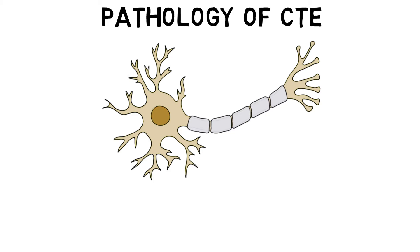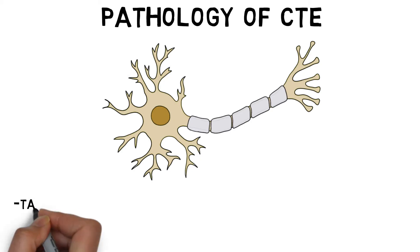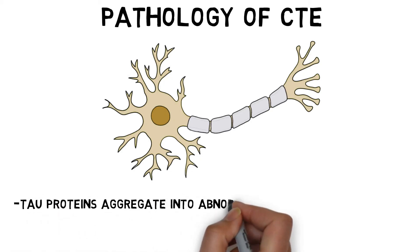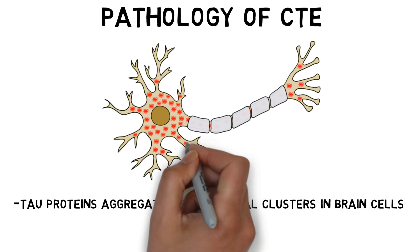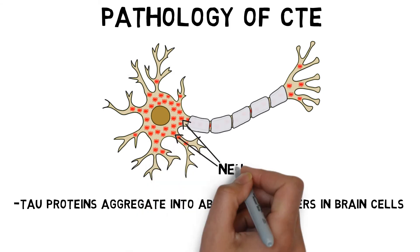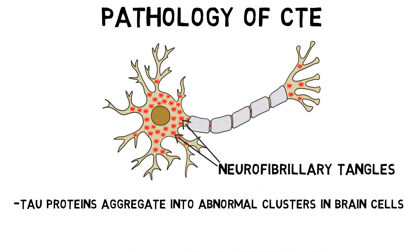In CTE, tau proteins accumulate in neurons and other cells like astrocytes to form abnormal clusters or aggregates. The tau aggregates are called neurofibrillary tangles when they form in neurons, and astrocytic or glial tangles when they form in astrocytes.